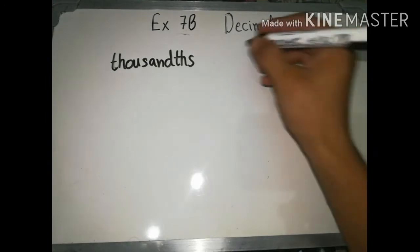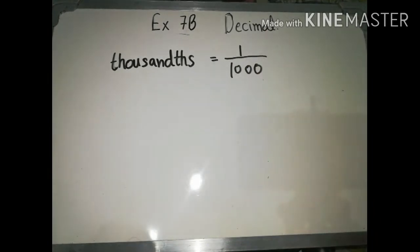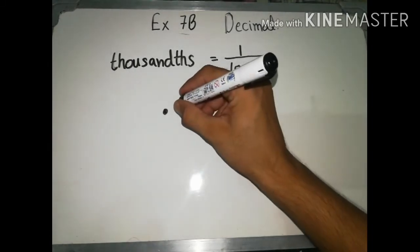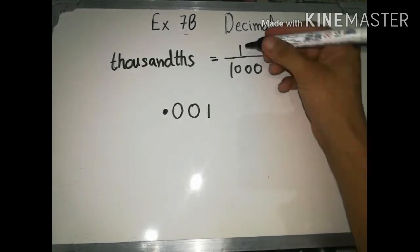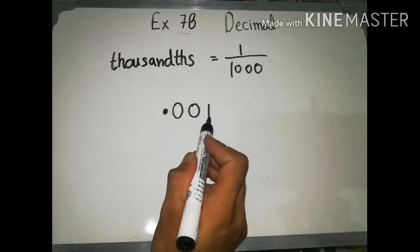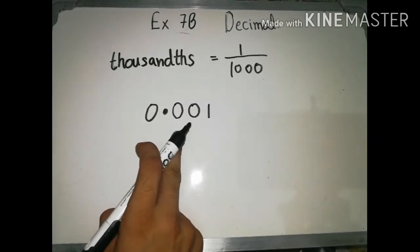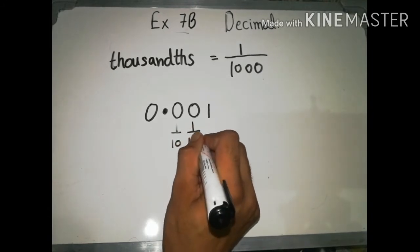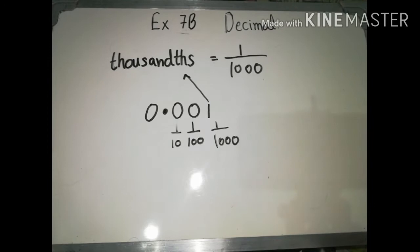In the thousands place we divide by one thousand. One divided by one thousand — in one thousand there are three zeros, so the thousandth place comes after three digits. This is the ones place, this is the tenths place, this is the hundredths place, and this is the thousandths place. So tenths means divide by ten, hundredths means divide by hundred, and thousandths means divide by one thousand. Exercise 7b is only based on the thousands place.